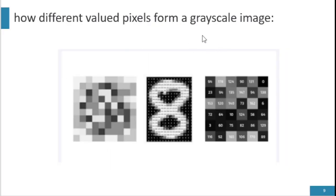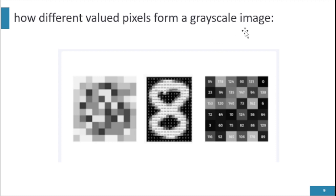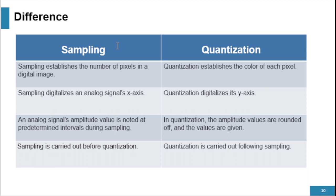After combining differently valued pixels, a grayscale image is formed. Each pixel is assigned an integer value after quantization. We can see different integer values for each pixel, and each number represents a different shade of gray. The collection of these pixels forms the image. In this example there are 256 quantization levels — from 0 to 255 — and this is how integer-valued pixels combine together to make a grayscale image.